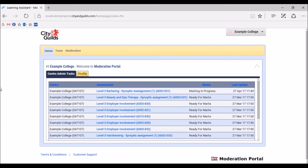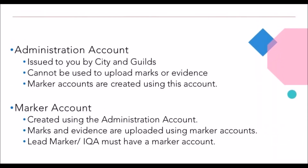Once you have logged in through the administration account, you can then create other accounts within the portal. The administration account is a generic account provided by City and Guilds, which you will use to log in in the first instance. You will be able to identify this as the username will be your centre number. This account should be used to manage users such as markers, assessors and exams officers, who will require access to the portal for uploading marks and evidence. You can only have one administration account per centre and cannot upload any marks or evidence from this account.